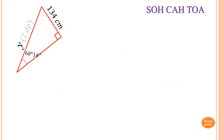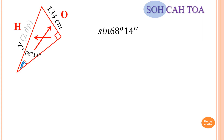Last question: find the value of Y. The angle given is 68 degrees and 14 minutes. 134 centimeters is given, which is opposite the angle, so we label it O. Y is the hypotenuse because it's opposite the right angle, so we label it H. We have O and H, so we use SOH. Sine of 68 degrees 14 minutes equals O over H, which is 134 over Y.